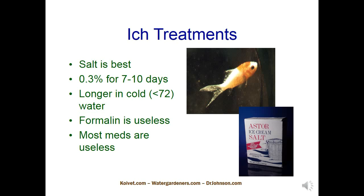Salt and ich treatments: there is a form of this parasite that is under the skin, and another form down on the bottom in a packet. The only place you can kill the ich is in the swarmer form. Salt waits to catch the parasite in the swarmer form — the nice thing about it is it's there all the time. A swarmer comes out of the packet, tries to swim up, hits the salt, and crenates. Salt is great, but I prefer Mardel Clout.